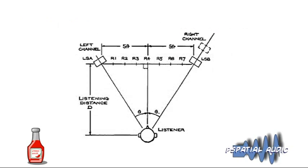In essence: for a low-frequency sound with a given ratio between left and right speakers it might appear at a certain position, but a high-frequency sound with the same ratio would appear more exaggerated — wider. If it was towards the left for low frequency, it would be even more towards the left for high frequency.